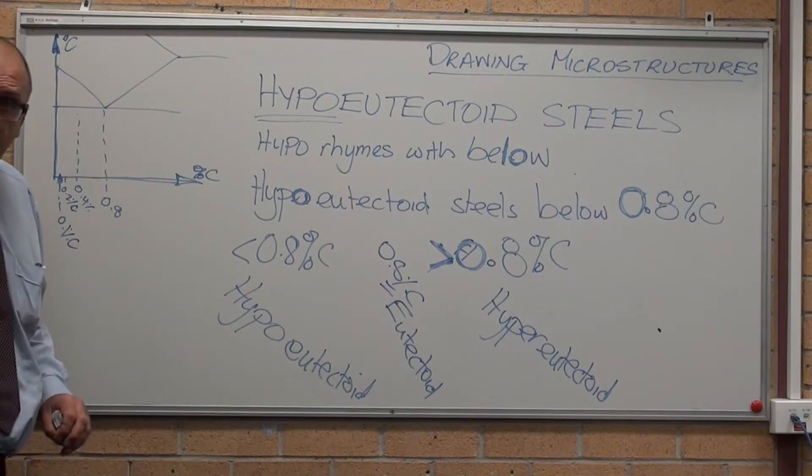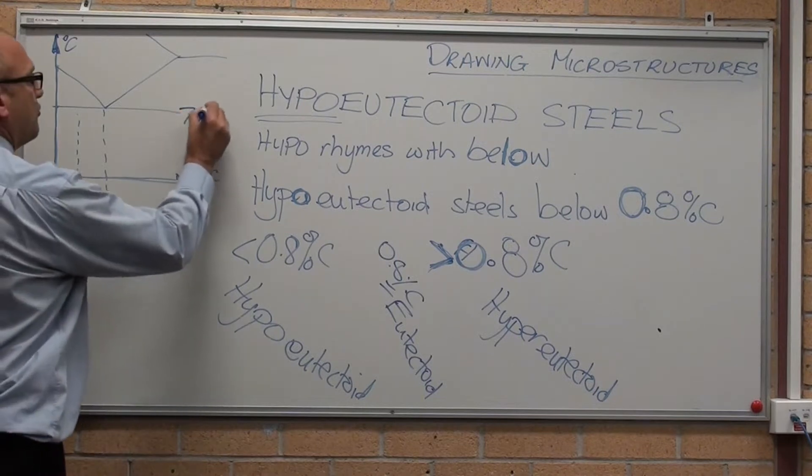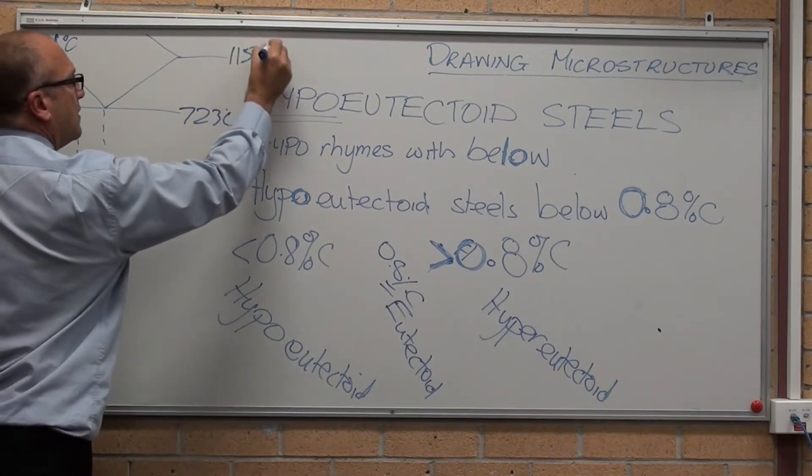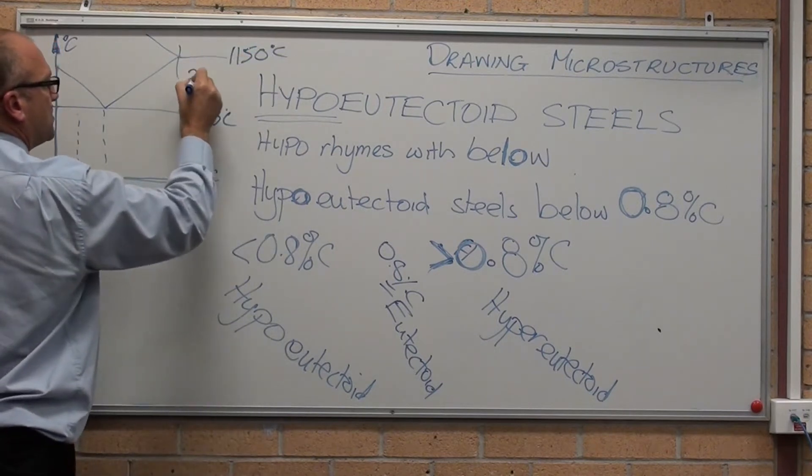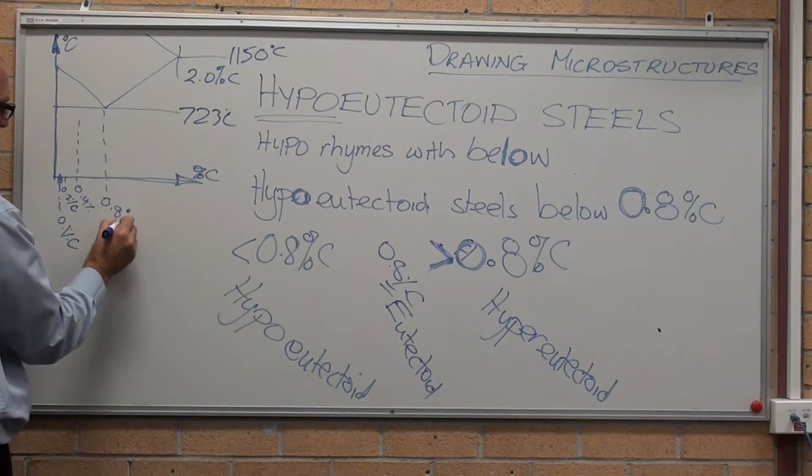Let's just have a quick look at the iron carbon equilibrium diagram. This chart - that's 723 degrees, that's 1150, that's 2% carbon, down here that's 0.8% carbon.